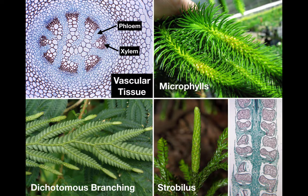Lycophytes are nearly unique in having dichotomous branching of both the stems and roots, so they fork into two parts. The leaves are unique in that they have a single unbranched vascular strand or vein in them — this is what makes them called microphylls — versus the multiple or branching veins seen in other vascular plants. All lycophytes have sporangia on the upper surface of the leaves or in the angle where the leaf attaches to the stem. Lycophytes usually have stroboli or cones at the tips of the stems, and they all have swimming sperm.